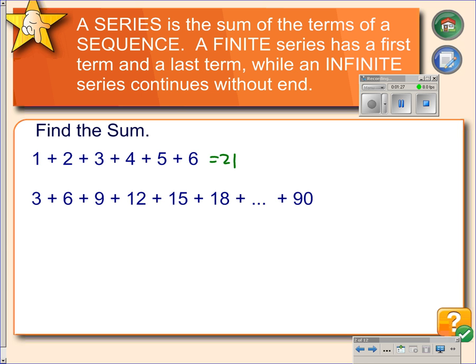But on the second series, we don't want to have to add all those numbers. There's so many of them. There must be an easier way. So let's go back to our first series here and see if there's some sort of pattern with the numbers. If we add this first term plus this last term, we get 7. If we add the next to last, we get 7. If we add the middle, we get 7.